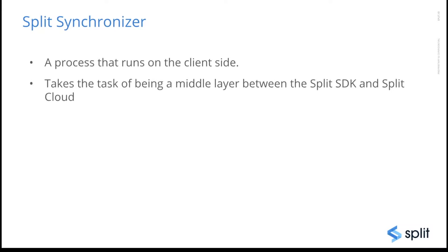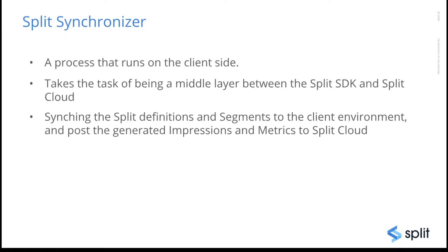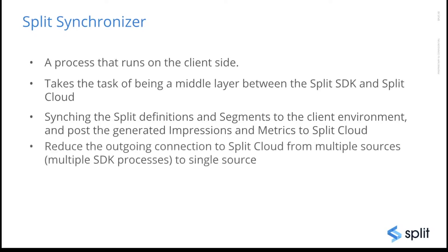The Split Synchronizer is a process that runs on the client side, meaning on the customer side, and it acts as a middle layer between the Split SDK and Split cloud. It will sync the split definitions and segments from the Split cloud to the client environment, and post the generated impressions and metrics to the Split cloud. This has one big benefit: reducing the outgoing connections to Split cloud from all the machines in your network that have the Split SDK installed, so that only one single source — the synchronizer — will connect to Split cloud. This is transparent to all the SDKs, which only need to know the entry point for the Redis database; the synchronizer takes care of the rest.